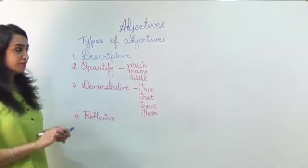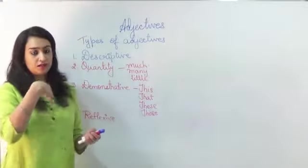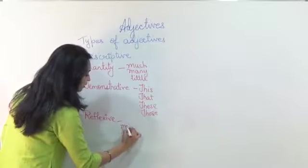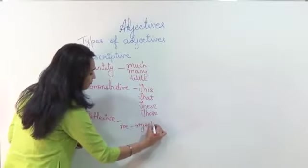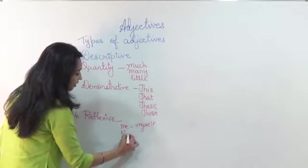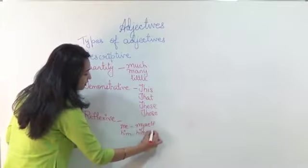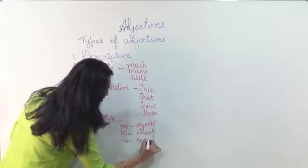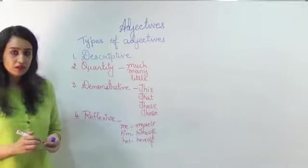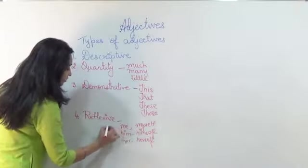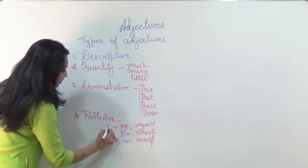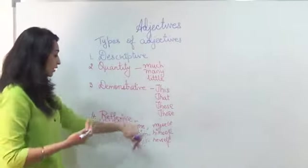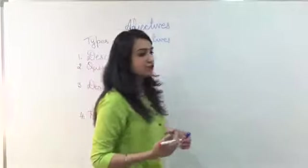Reflexive is basically when you talk about yourself or someone else. When I am talking about me, I will say myself. When I am talking about him, I will say himself. I am talking about myself. So these are the types of adjectives that are there.